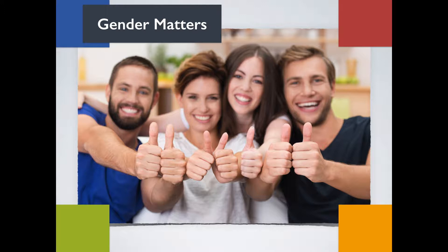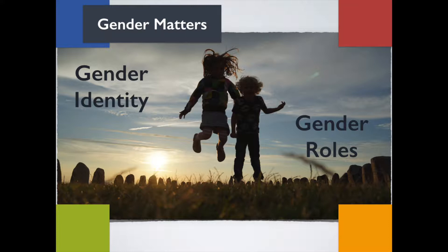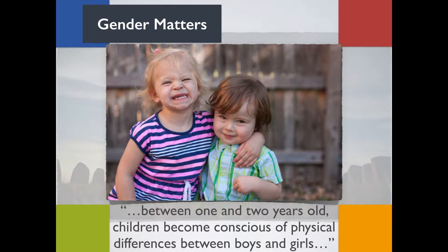Let's address gender identity and gender roles, as this information directly affects how young children think and learn. According to the American Academy of Pediatrics, a child's awareness of being a boy or a girl starts in the first year of life. Before their third birthday, they are easily able to label themselves as either a boy or a girl as they acquire a strong concept of self.